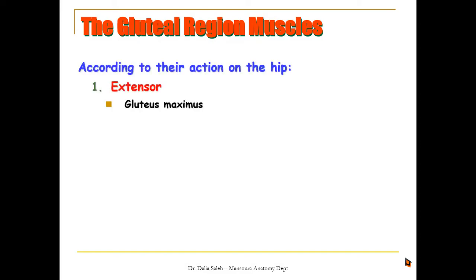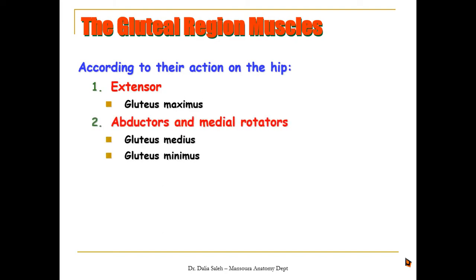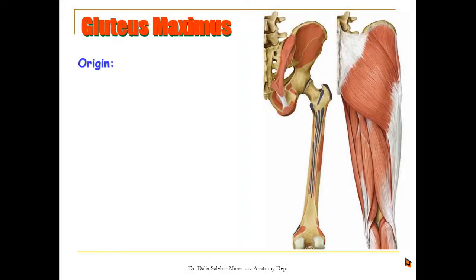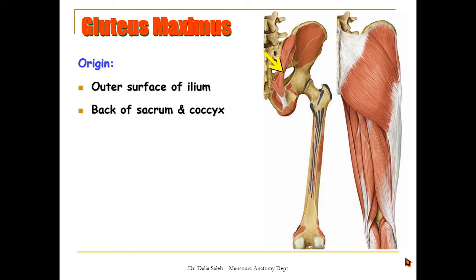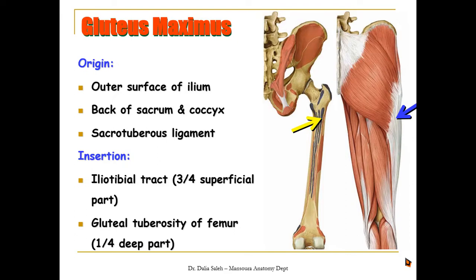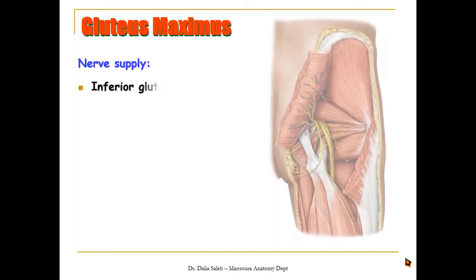We can also classify the gluteal region muscles by function. The main extensor of the hip is the gluteus maximus. The abductors and medial rotators include the gluteus medius and minimus. The short lateral rotators include the piriformis, obturator internus, obturator externus, superior and inferior gemelli, and quadratus femoris. The origin of gluteus maximus is from the outer surface of the ilium behind the posterior gluteal line, from the back of the sacrum and coccyx, and from the sacrotuberous ligament. It passes downward and laterally, with its most superficial part inserting into the iliotibial tract and its deeper part inserting into the gluteal tuberosity of the femur.